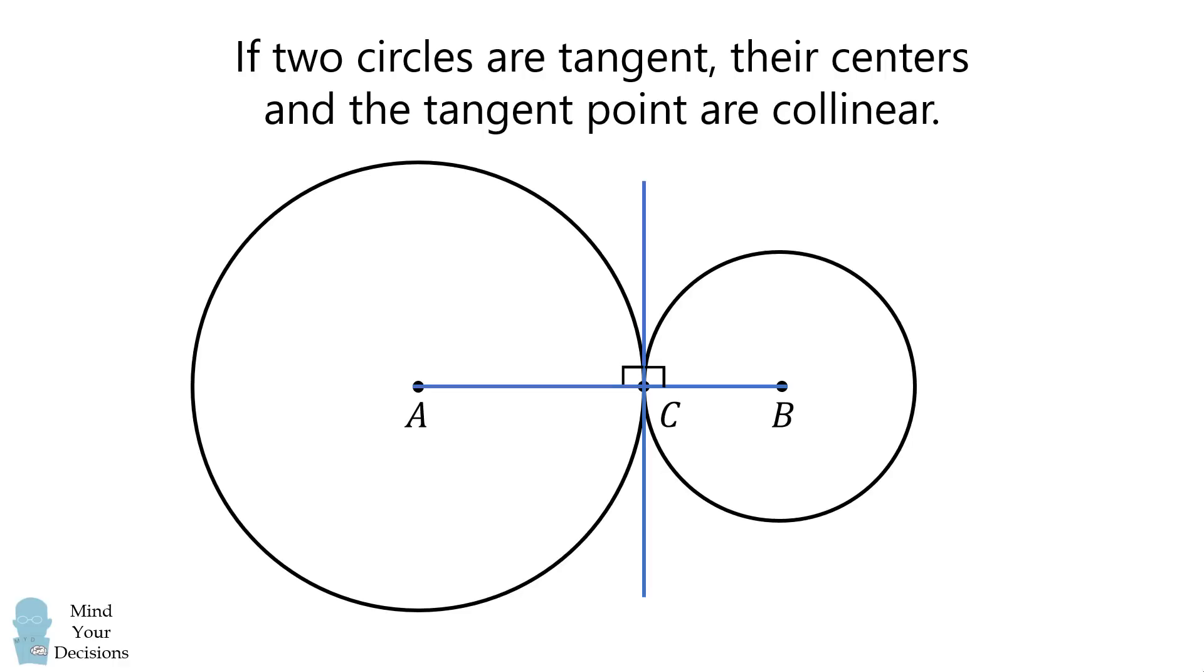Therefore, ACB is a straight line, and all points A, C, and B are along the same line. This is true for externally tangent circles, and it's also true for internally tangent circles.